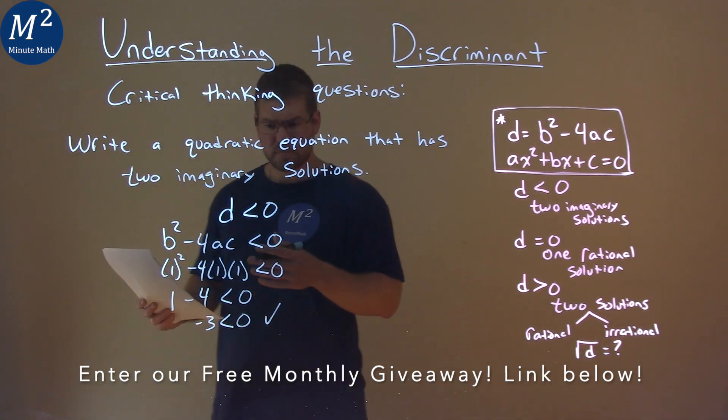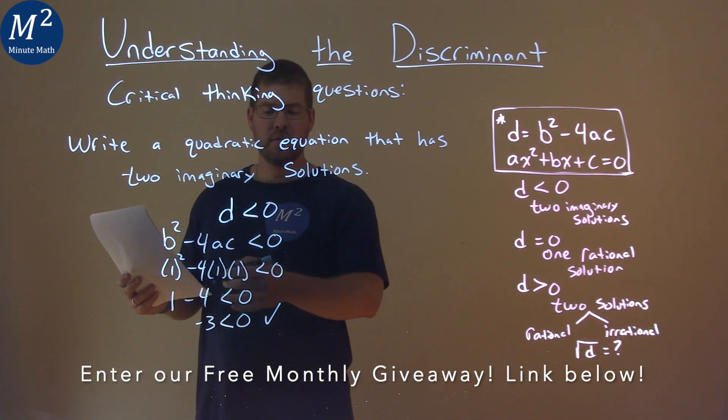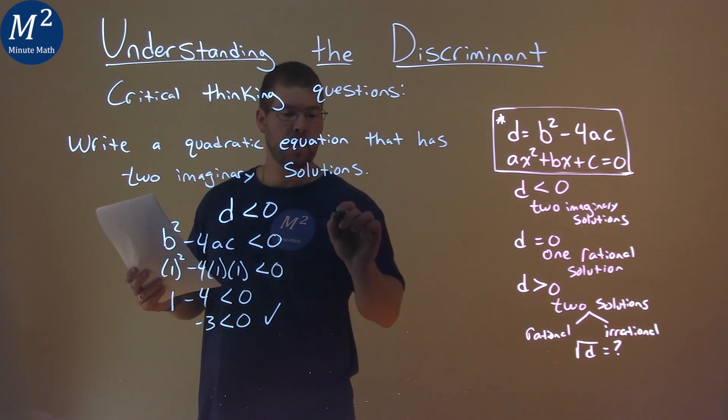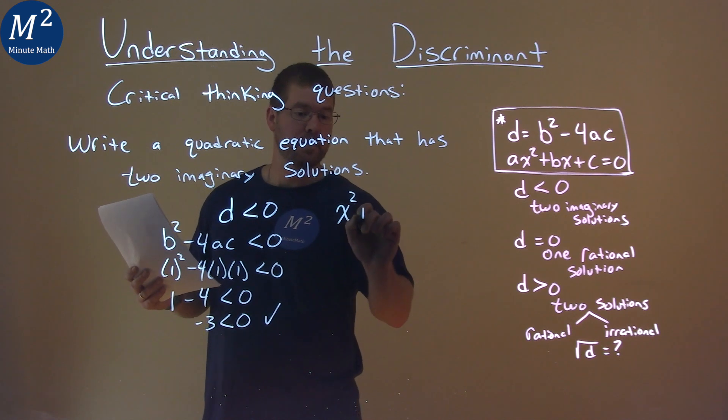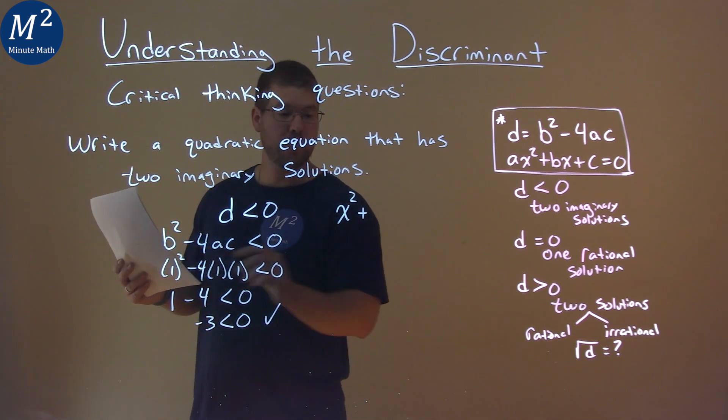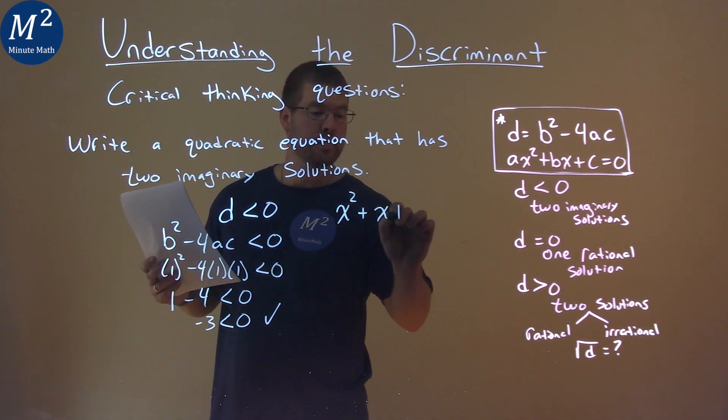And so, we have a b value of 1, a value of 1, and c of 1. Let's go write a quadratic. Coefficient in front of x squared is that 1, just leave it like that. Plus, same thing with the x to b value, also 1. Our c value is 1, we put a plus 1, and then it's equal to 0.